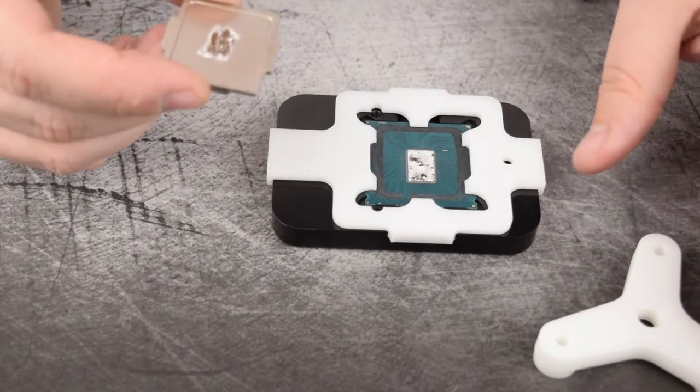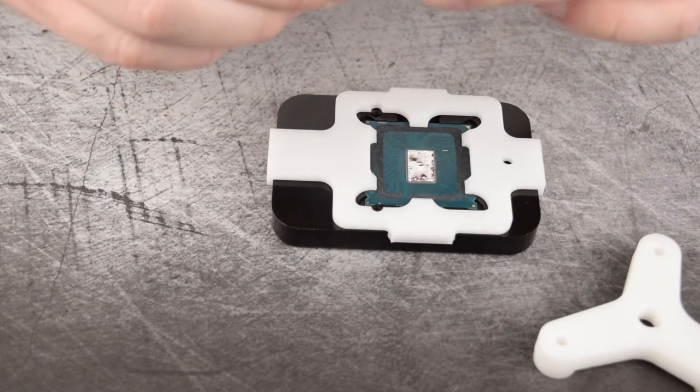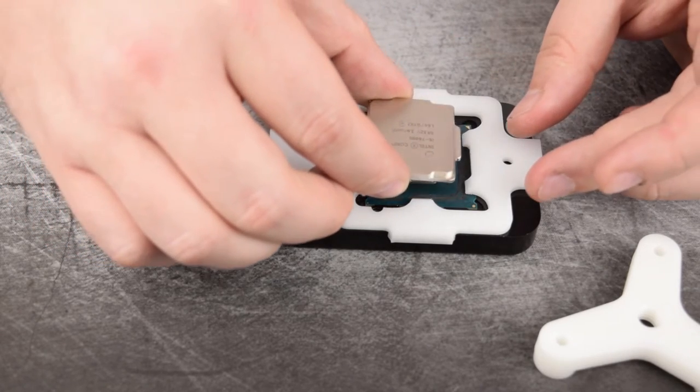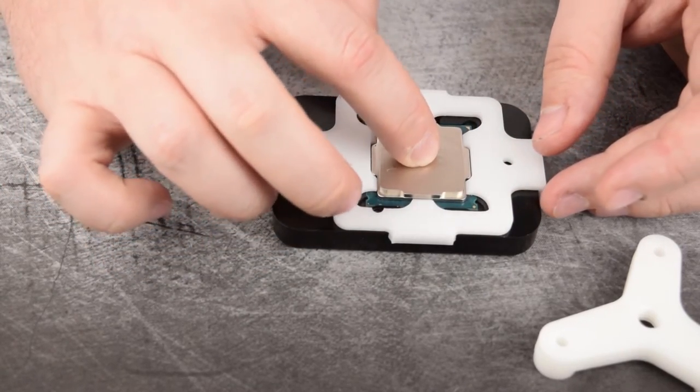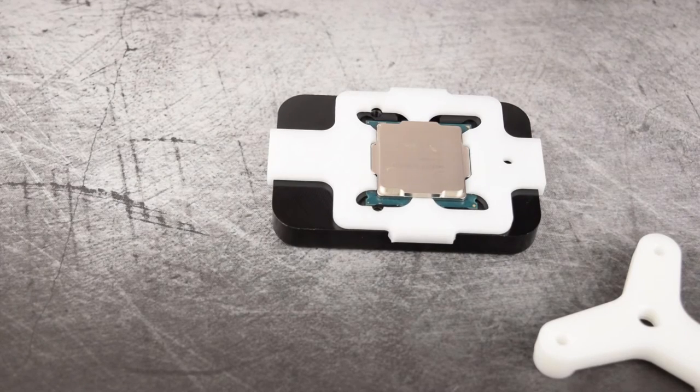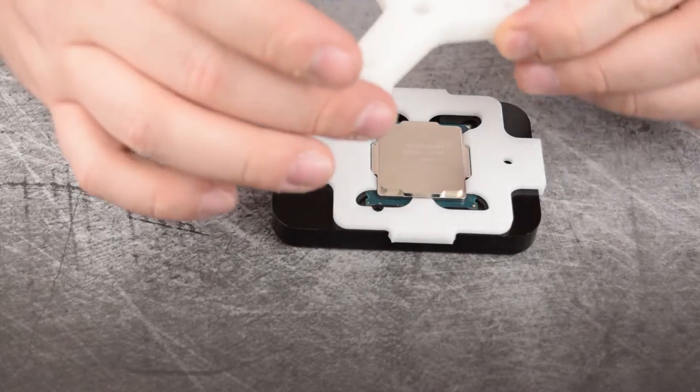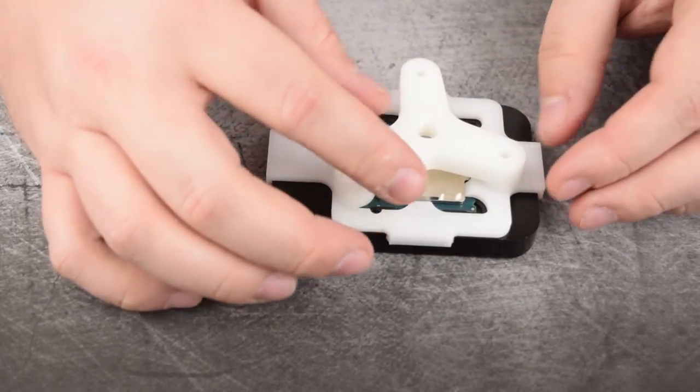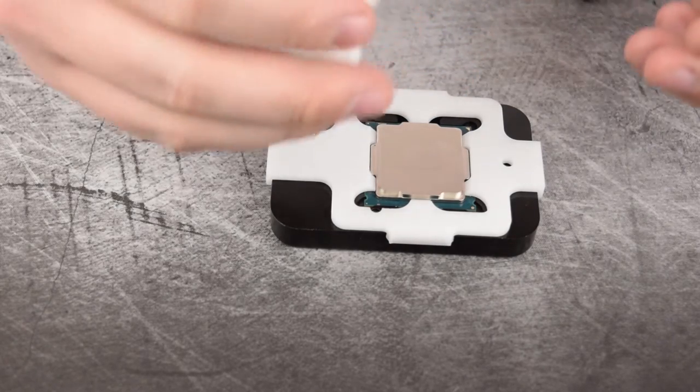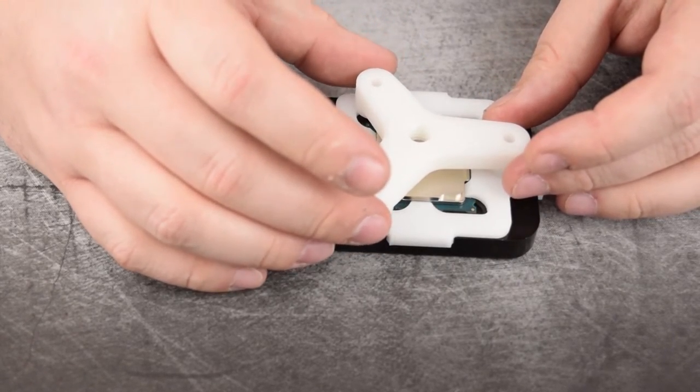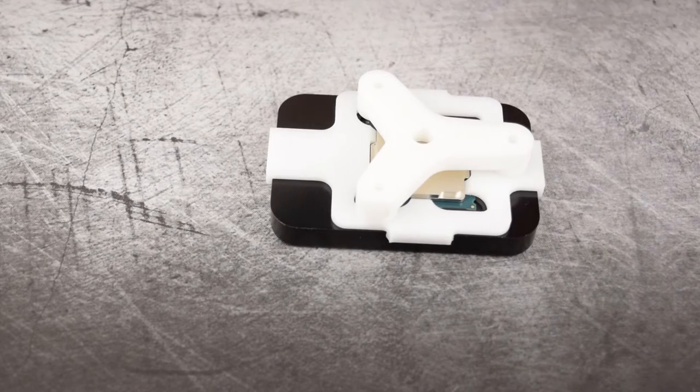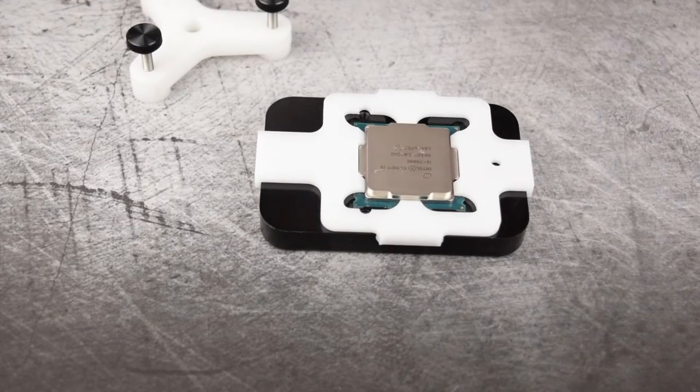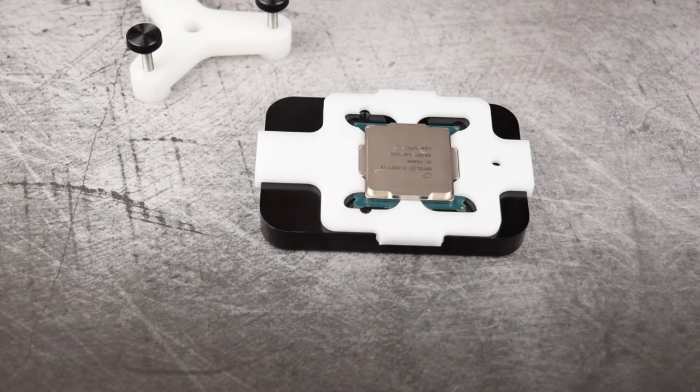So next we're going to put the IHS back on the chip. Make sure that you have the chip oriented the correct way. And that puts it right back in the exact position that it was before we de-lid it. We'll take this tool and this will go right over the top. It will line up with the same holes that the other piece did. Now that we know exactly how it goes on, we're going to go ahead and get the glue out that we're going to reattach the IHS with.